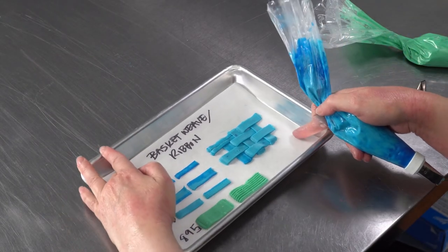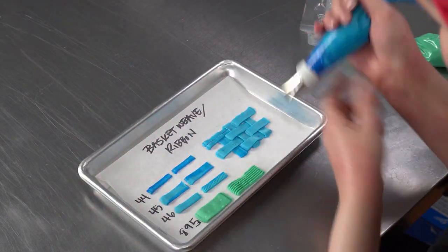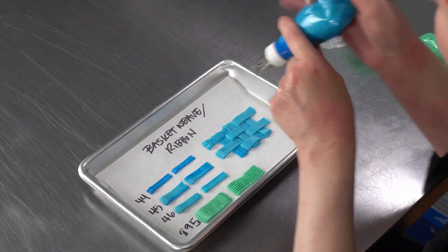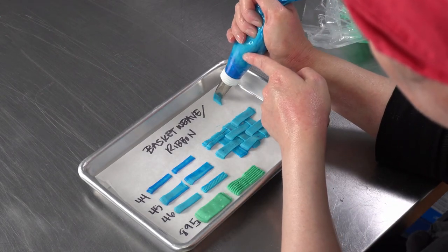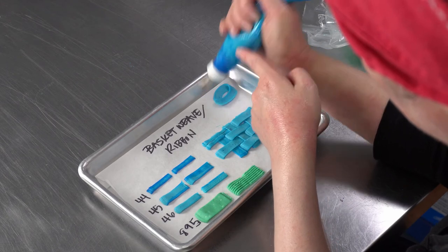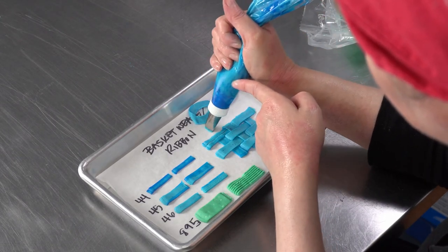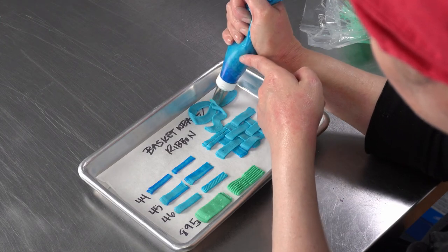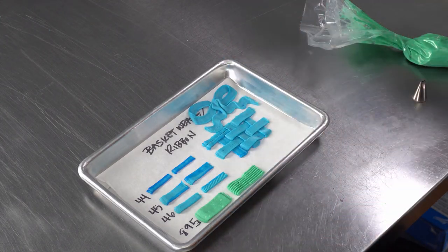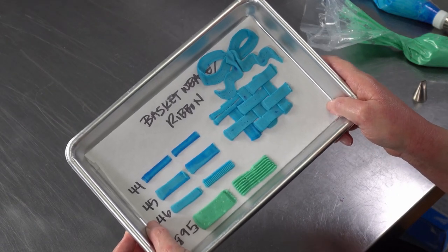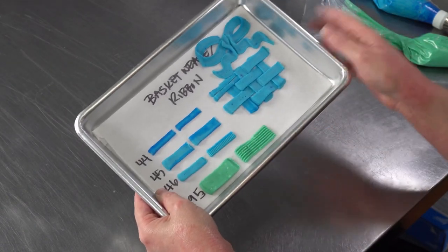You can also use these tips to make ribbons and bows. So there's a few things that you can use them for. They're really versatile, and they come in a range of sizes.